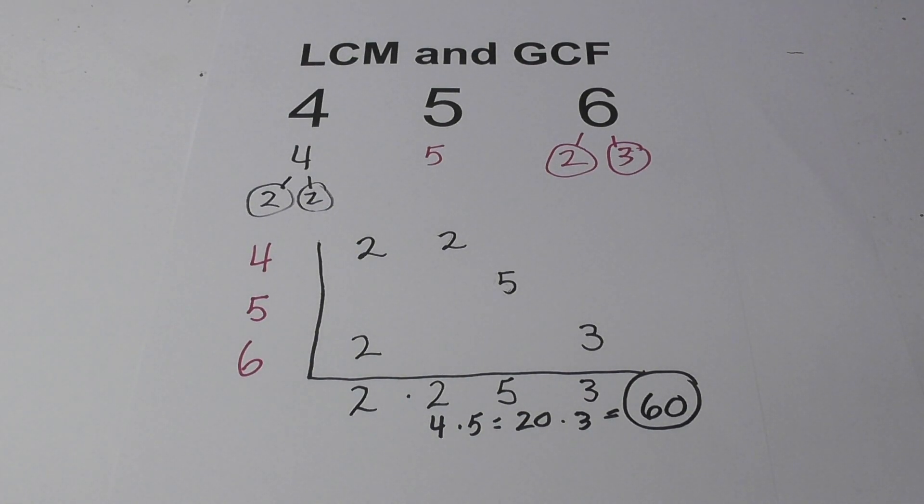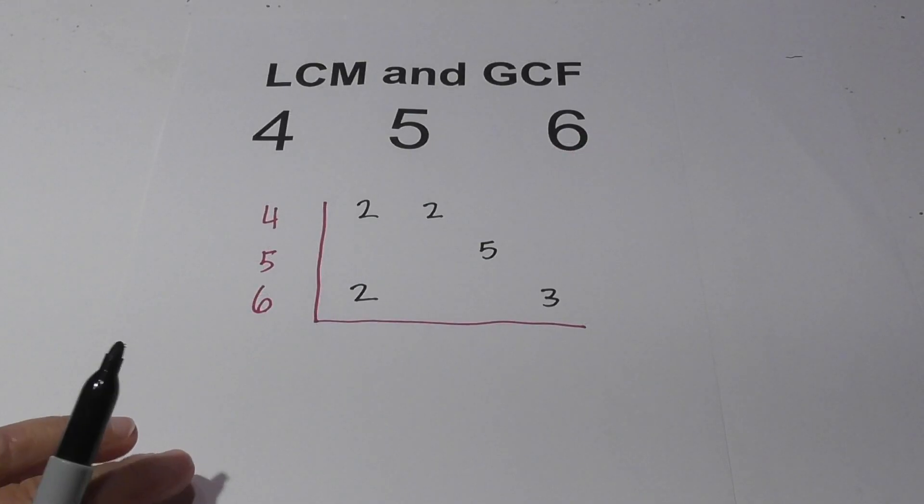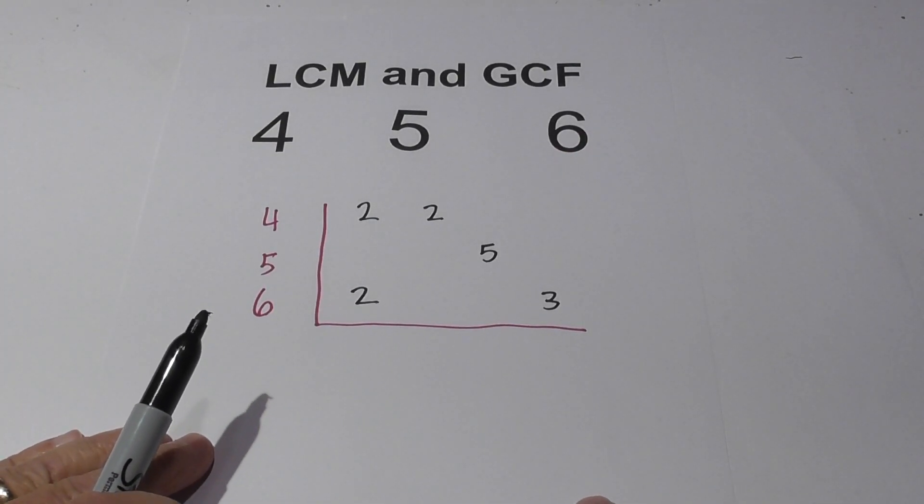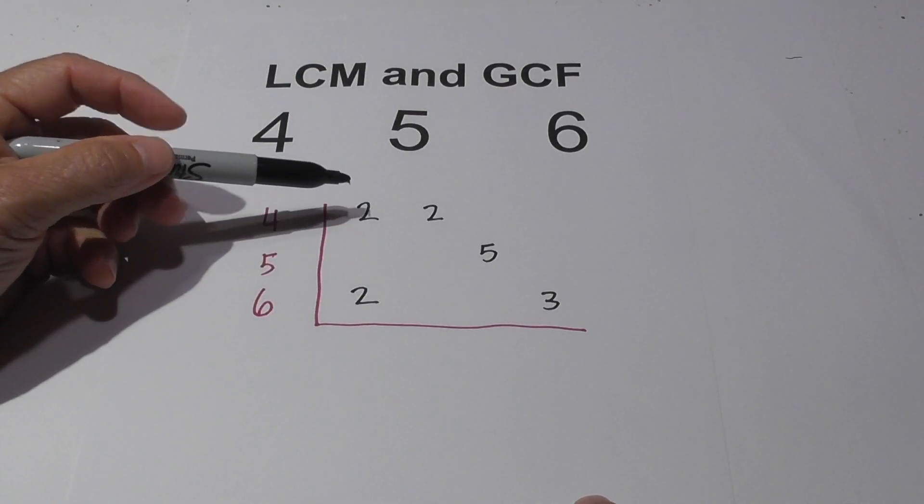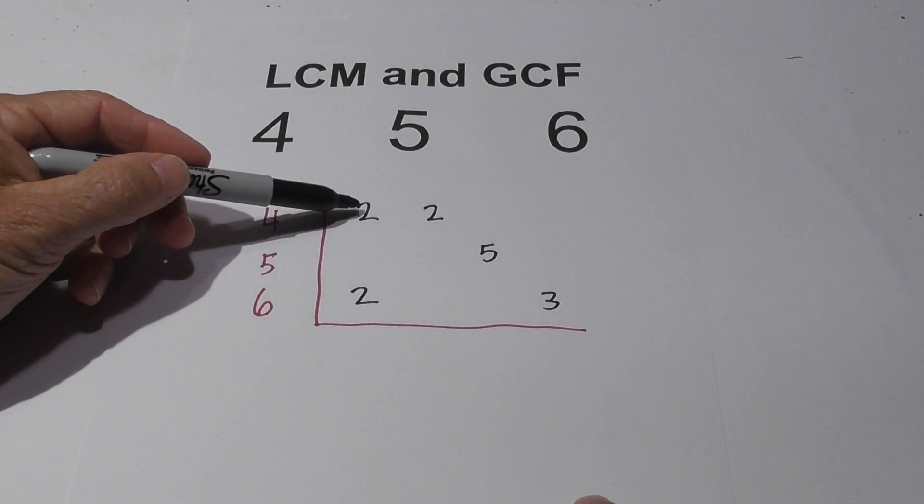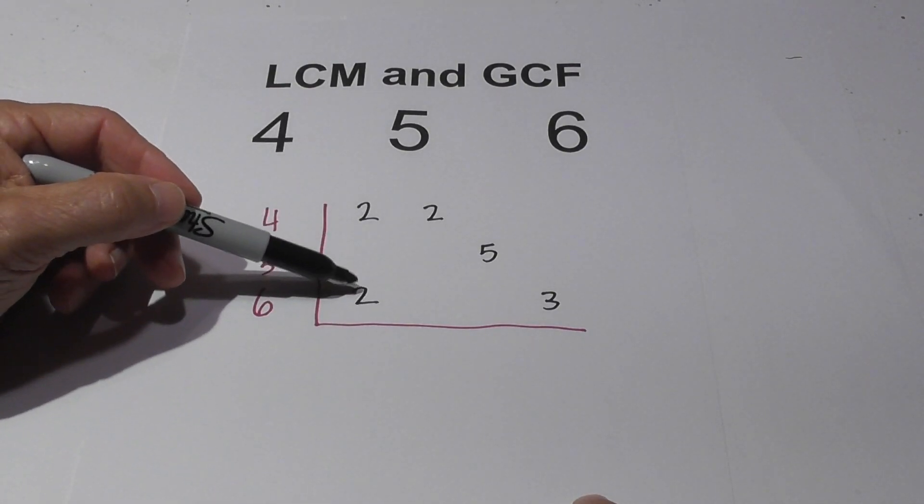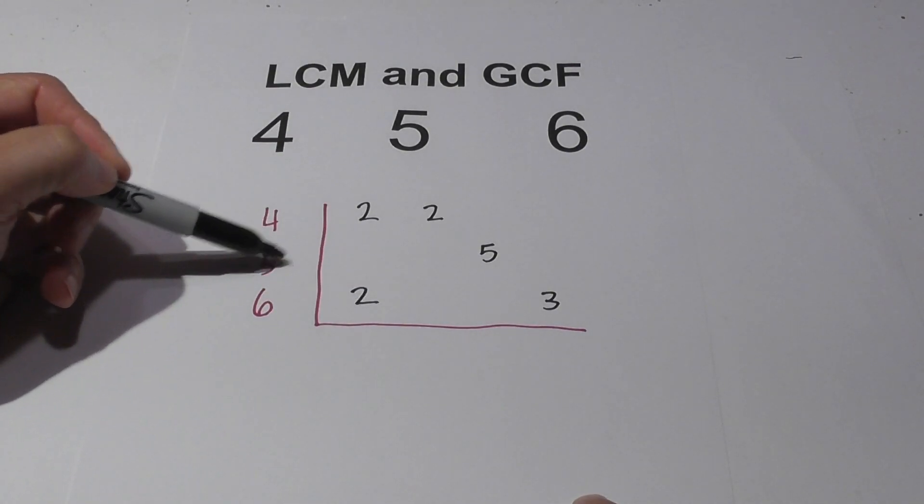Now let's work on the GCF. For the GCF, you notice I've rewritten this chart. The rule is this: you must have a prime factor that is found in all three numbers. Since here we have two, but not all three, because five does not have one...